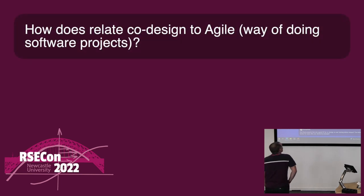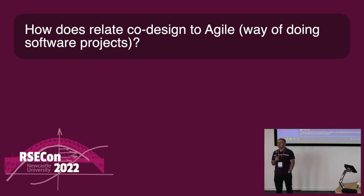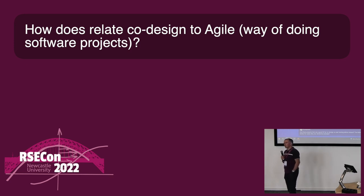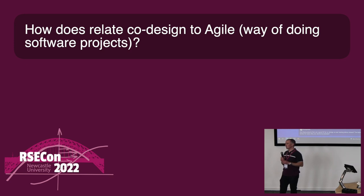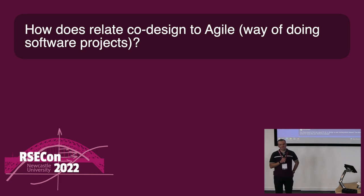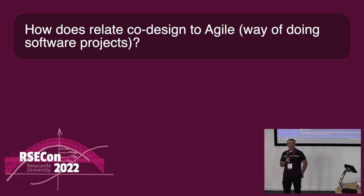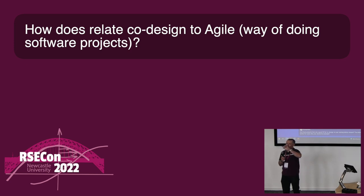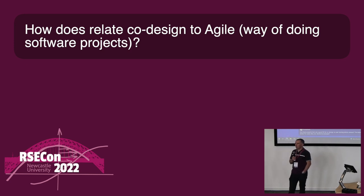Question: How do you relate co-design to agile — as in the way of doing software projects? We certainly use agile in our team — we use Scrum as our software development methodology. There are different ways of bringing co-design into that, depending on how frequently you can access the other members of the group. If you can access them very frequently, you could bring them into your Scrum planning and review meetings to get their contribution directly. If they're more busy, you should take the co-design output from those discussions and feed it in less directly into your planning and review, perhaps using a single representative as a product owner or similar role.